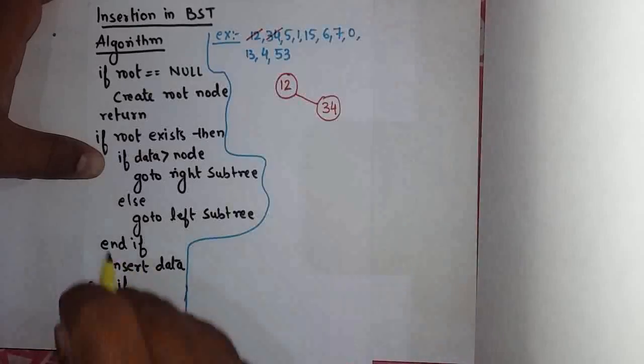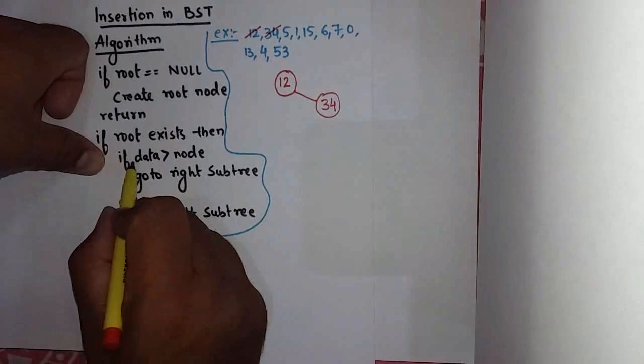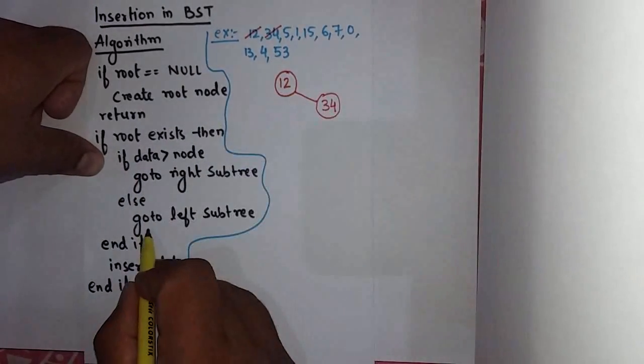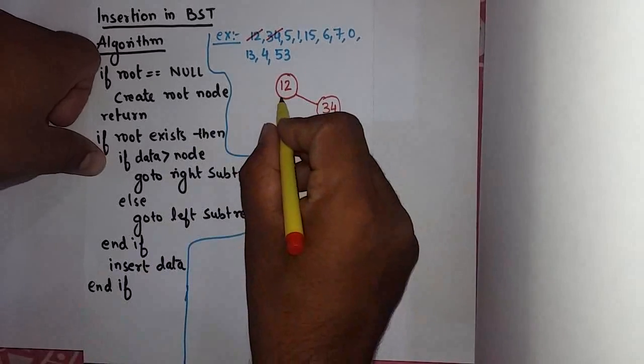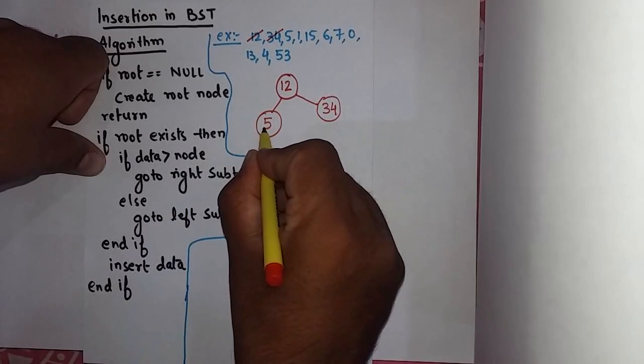34 is also done. Now next is 5. 5 is greater than 12? No. Then I will go to left subtree, so I will create a node with 5 here.